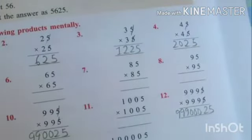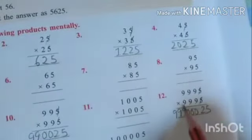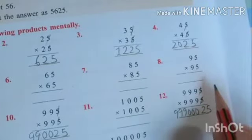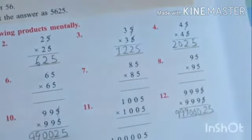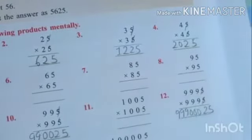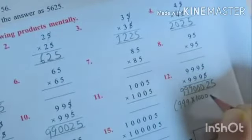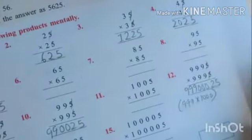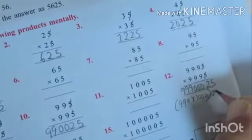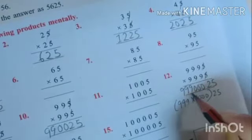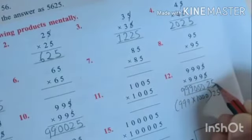Sorry, 999 ki baad 1000. Hume product nikalna hai iska aur iski after number se. It means I am showing you 9999 multiplied by 1000. When you will multiply this number you will get 9,999,000. Suffix in kya 25 ko.